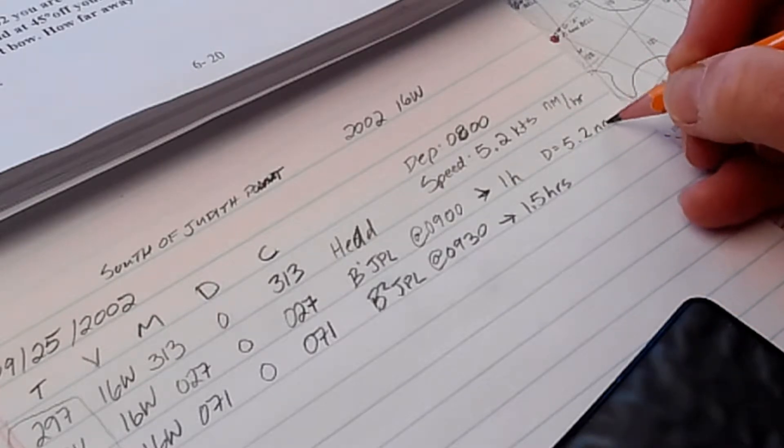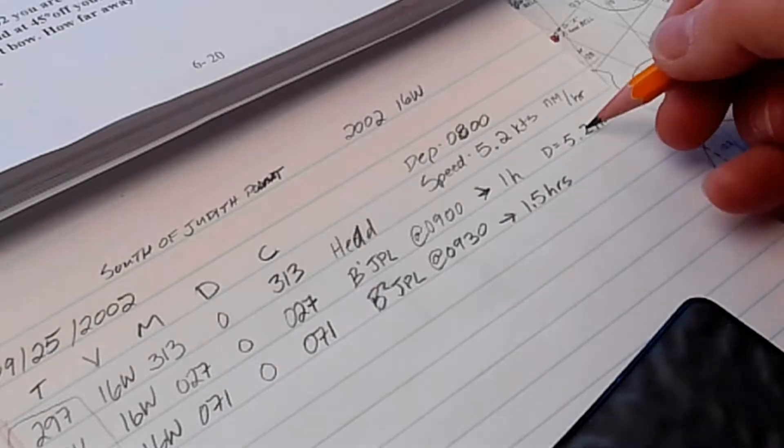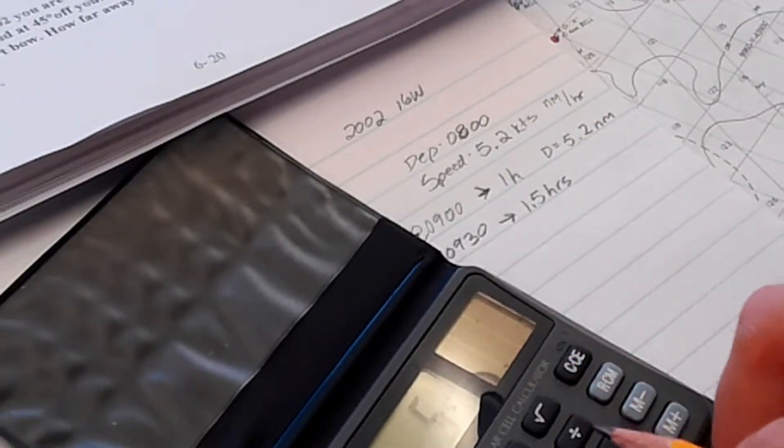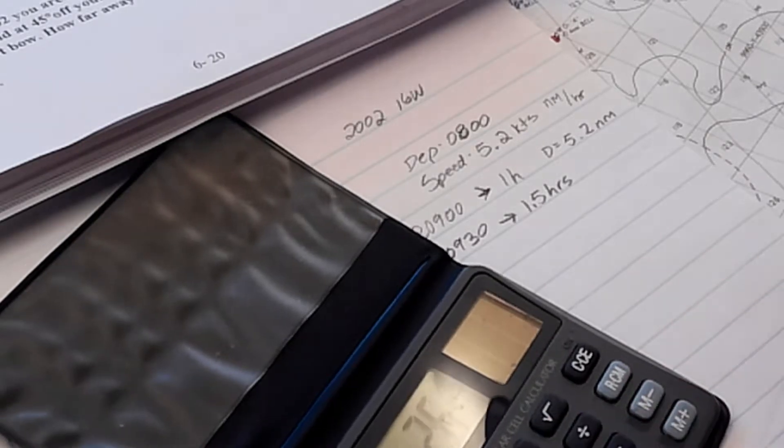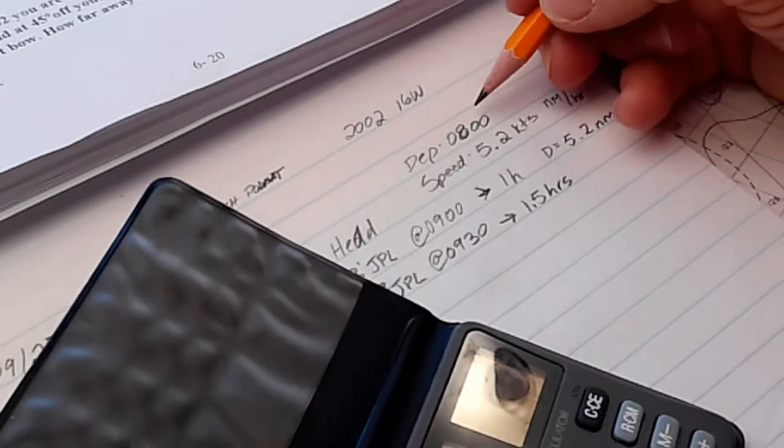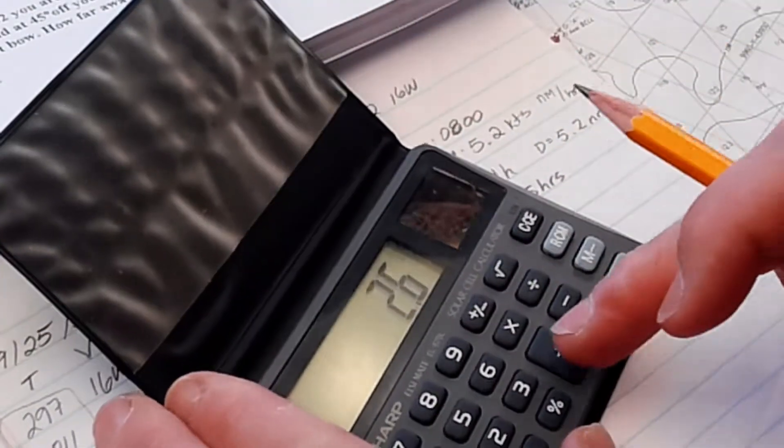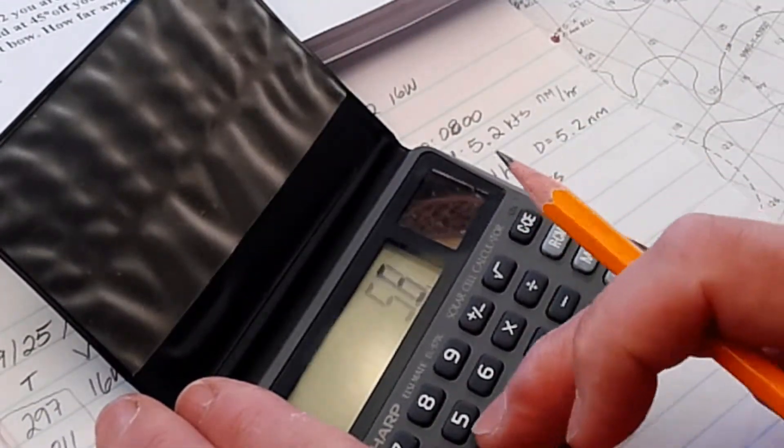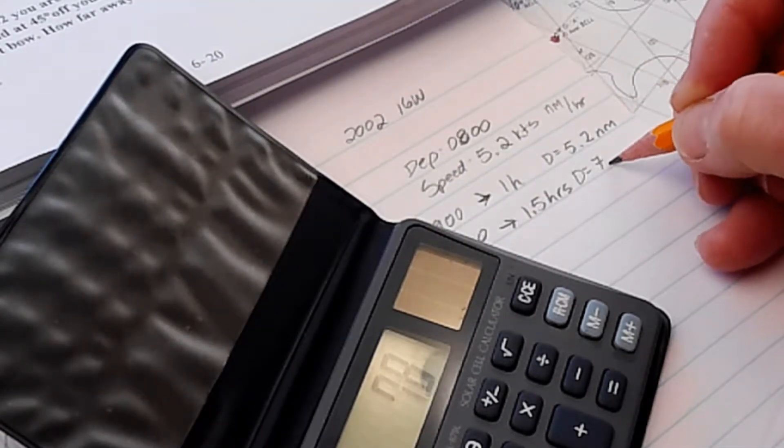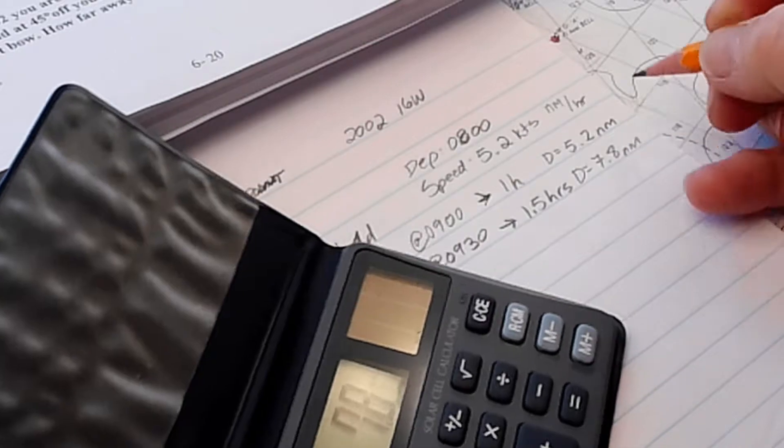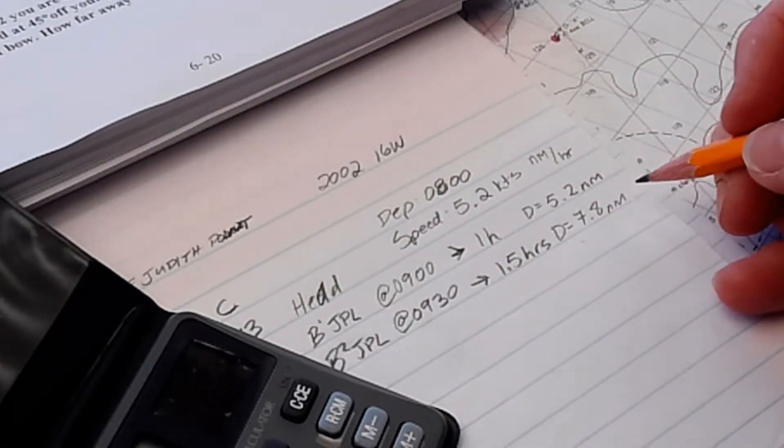Then I traveled half an hour more, which would be half of that. 5.2 divided by 2 is 2.6, so the entire amount was 5.2 plus 2.6. My total distance traveled from 0800 to 0930 was 7.8 nautical miles.